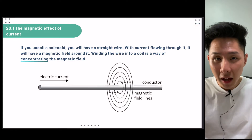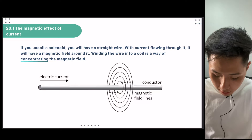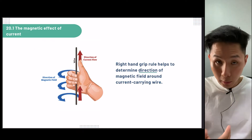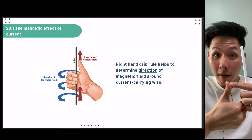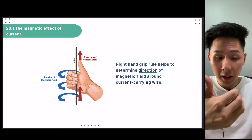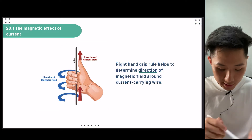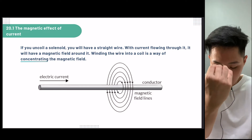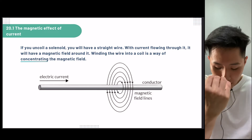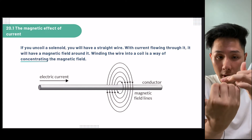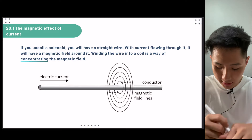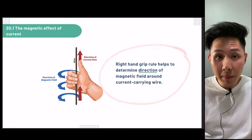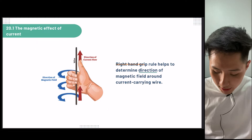One way for us to identify the direction of the magnetic field generated, whether it's clockwise or anticlockwise, is to use a rule called the right-hand grip rule. The thumb here will be the direction in which the current is flowing, and all your other fingers will show the direction of the magnetic field generated. So if you look back at this diagram, you can try to point your thumb to the right-hand side, and then you'll find that the direction of the magnetic field is just in front of you — and it's in this direction. So that's how we determine the direction of the magnetic field using the right-hand grip rule.